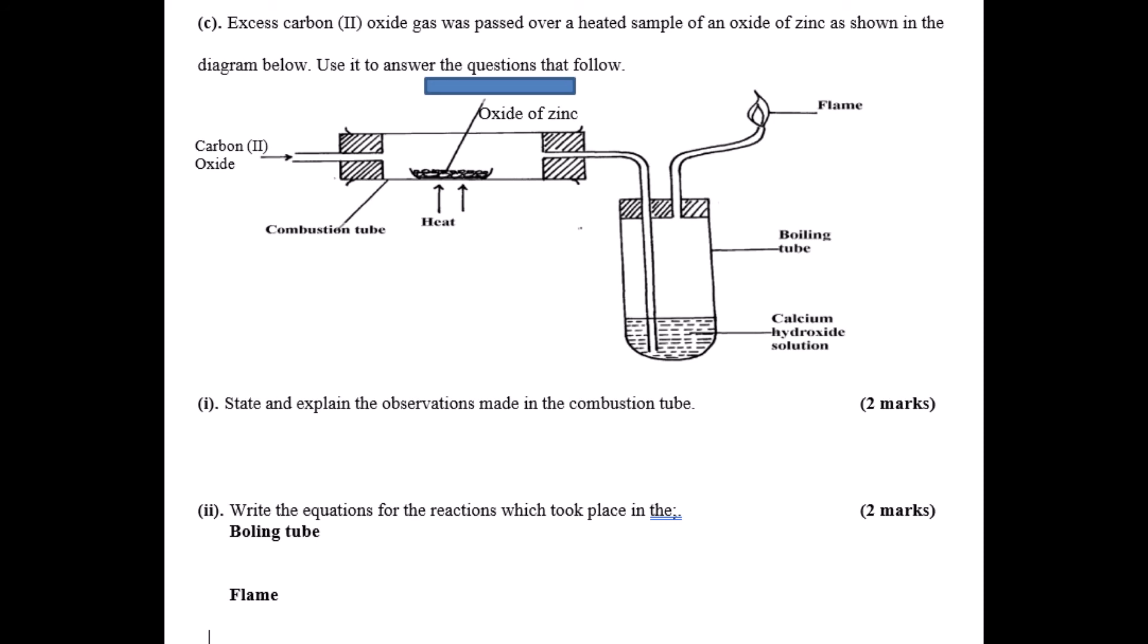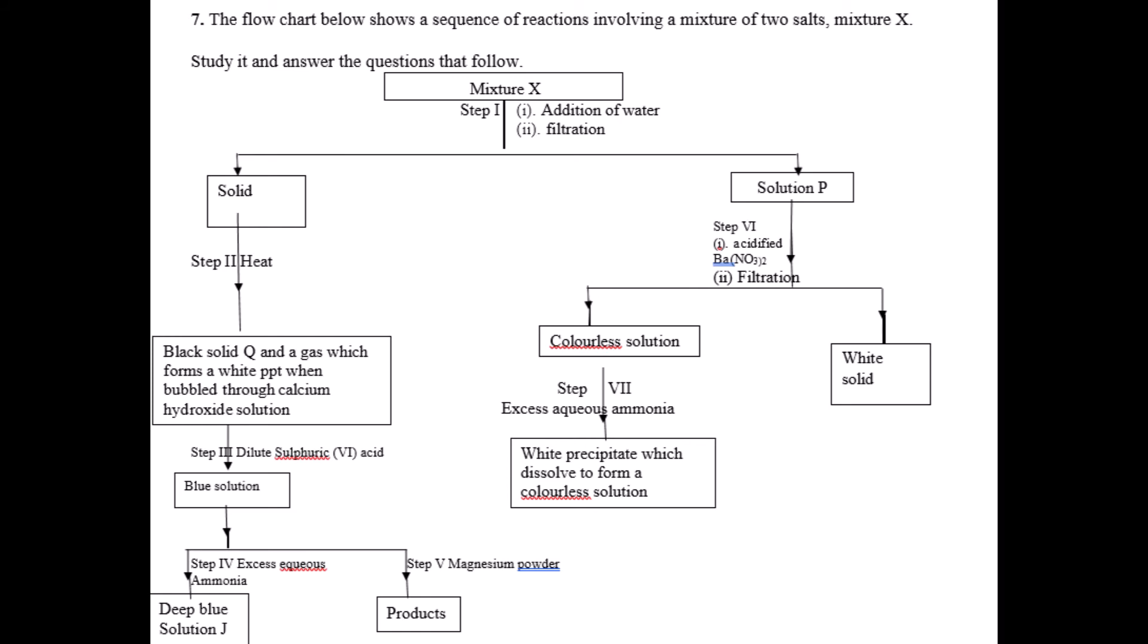Question number 7 is on qualitative analysis. You have a flowchart with mixture X. Water is added to mixture X, then filtration is done. The residue, a solid, is heated. Once heated, you get a black solid Q and a gas which forms white precipitate when passed through calcium hydroxide solution. In step 3, the black solid has sulfuric acid added and becomes a blue solution. When aqueous ammonia is added until in excess to the blue solution, you get a deep blue solution J.